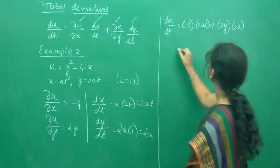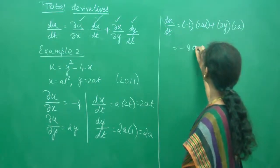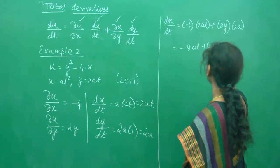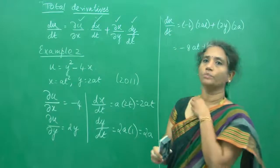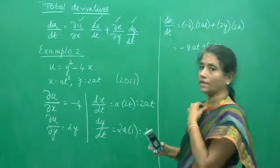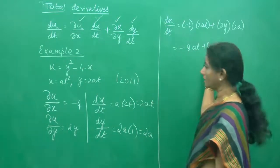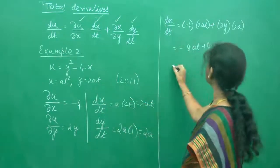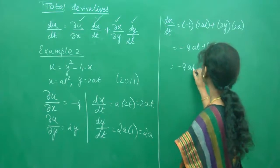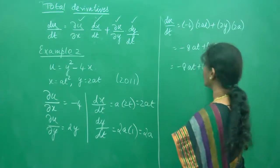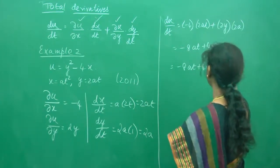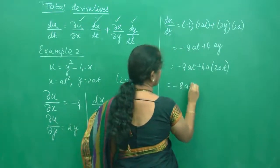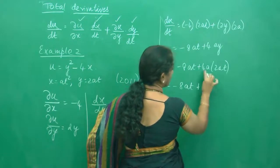So this becomes minus 8at. 2 times 2 is 4ay. And as you know, we cannot stop with x and y and t. I am replacing this y and then I will stop everything in terms of t. What is y? 2at. So I will substitute here minus 8at plus 4a into 2at. So the net answer is minus 8at plus 4 times 2 is 8, a into a is a square t.